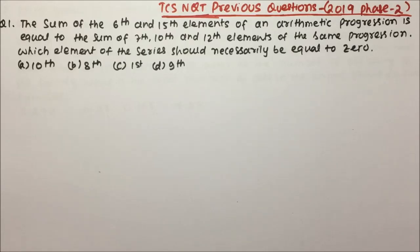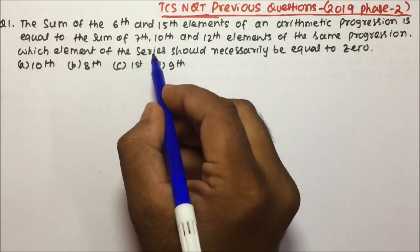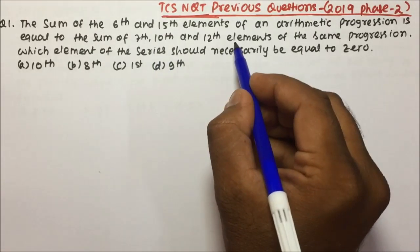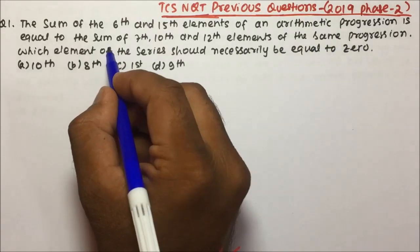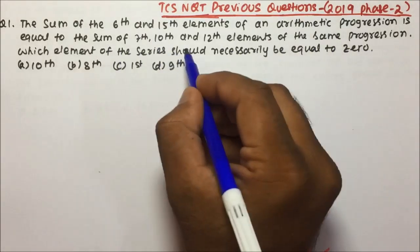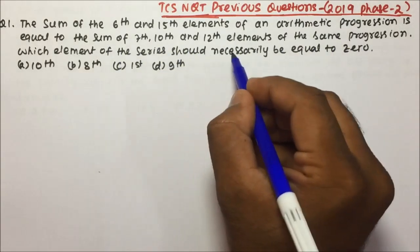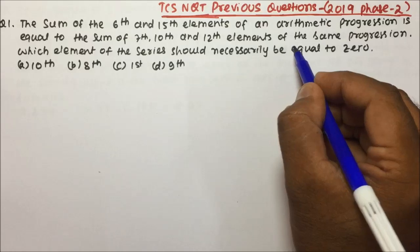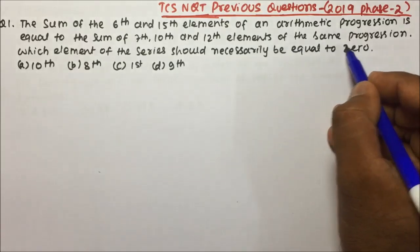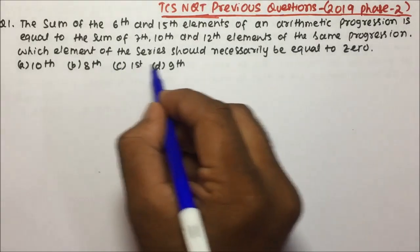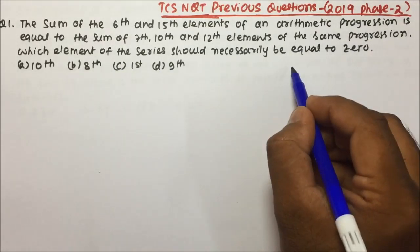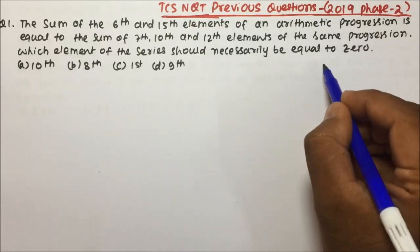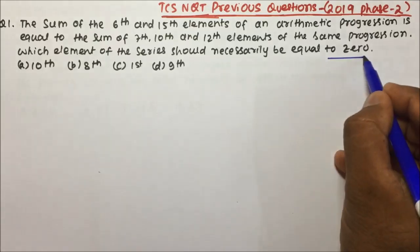Let us start with question number 1. The sum of the 6th and 15th element of an arithmetic progression is equal to the sum of the 7th, 10th and 12th elements of the same progression. Which element of the series should necessarily be equal to 0?